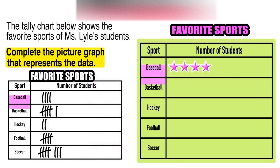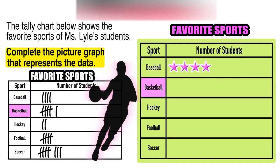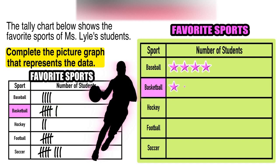Our next sport was basketball, which we can see in the chart has six tallies. So in our picture graph, we need to include six stars.